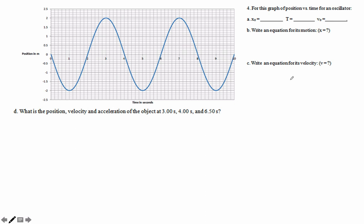For this graph of position for an oscillator, what is the amplitude, the period, and the maximum velocity? The amplitude looks like it's two. We start here, do a full cycle in four seconds, two cycles in eight, so the period is four seconds.